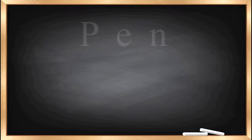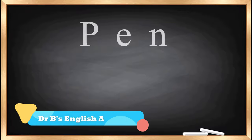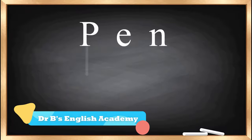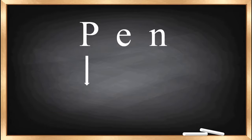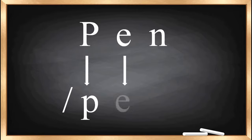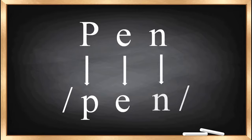The next word is 'pen'. You can transcribe this word as: P gives /p/, E gives /e/, and N gives /n/. So the transcription of 'pen' is /pen/.